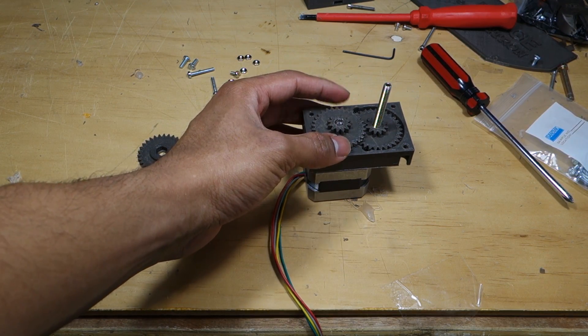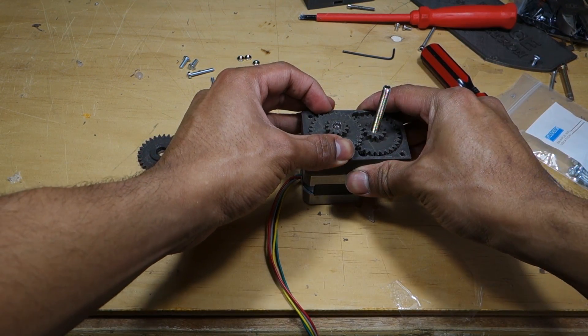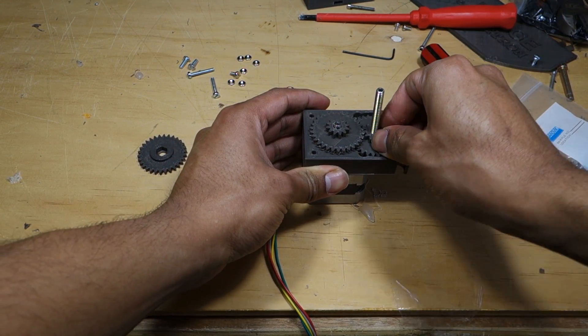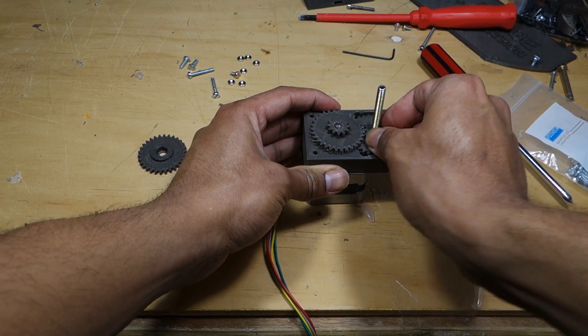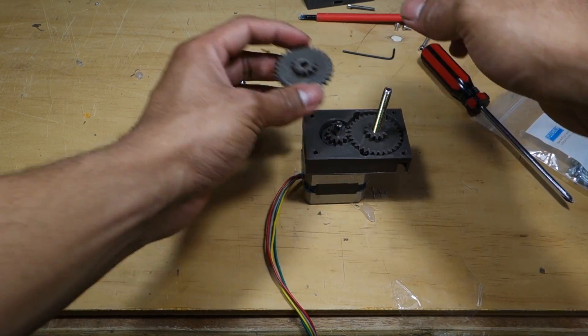Do the same with the second intermediate spur gear, this time pushing it onto the motor shaft. It should engage with the previous spur gear. Don't try spinning the gears now because the gearing ratio is going to make it really hard.